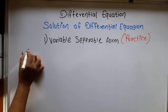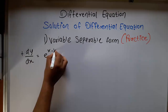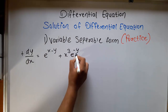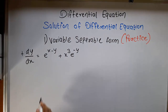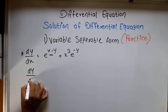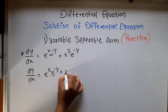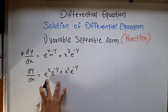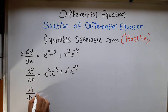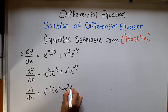The first equation will be dy/dx equal to e raised to (x minus y) plus x cubed e raised to minus y. Here, we split this into dy/dx equal to e raised to x times e raised to minus y, plus x cubed e raised to minus y. From these two terms, we take out e raised to minus y as a common factor. That gives dy/dx equal to e raised to minus y times (e raised to x plus x cubed).